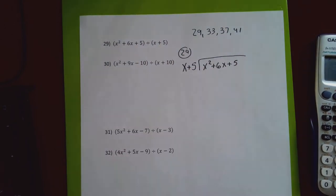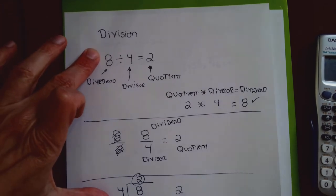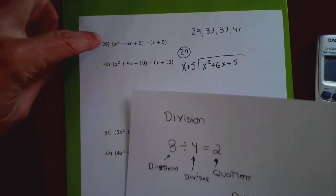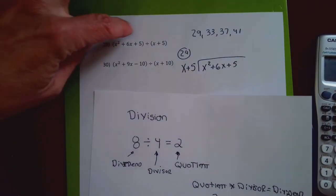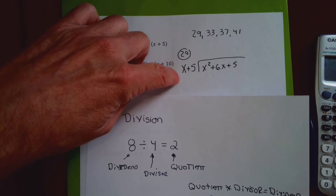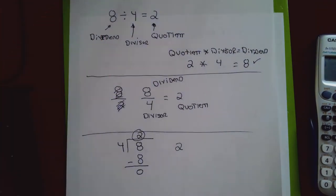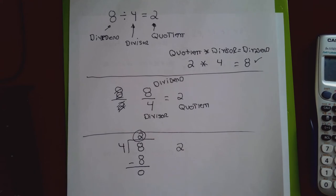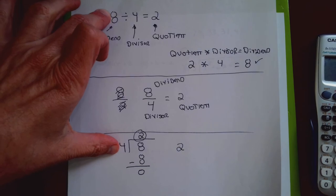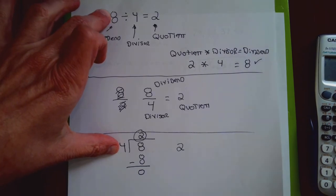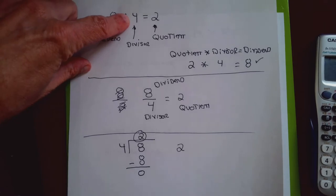What's to the left of the division bar goes under the division sign, and what's to the right of the division bar goes to the left of the division sign. I kind of did this at the beginning of this lecture, part one. I can transform a division problem with a fraction into a long division problem: what's written first goes under the division bar, what's written second goes outside the division bar.